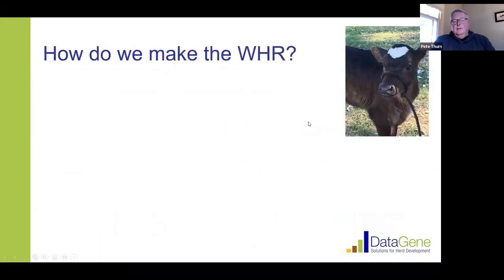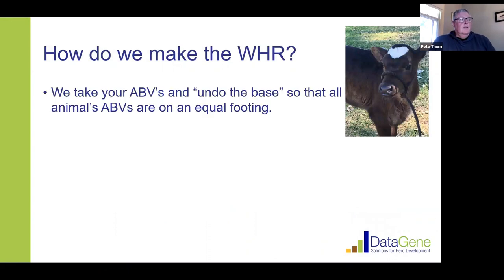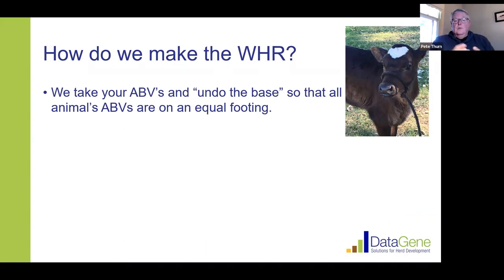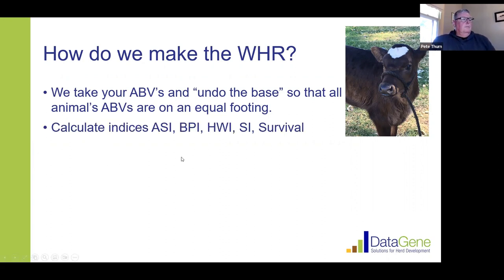Moving forward — how do we make this within-herd ranking? The first thing we have to do is take the ABVs for a particular herd and undo the base that we've implemented. By removing it, all of the cows, heifers, and calves within your herd are all on an equal footing. We've removed breed out of the picture — we've just said you're all a big mob of black cows and you can all be compared equally on the basis of just being a cow, not a Holstein or a Jersey.